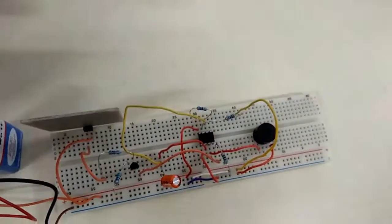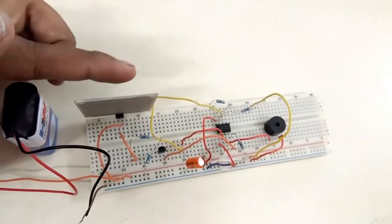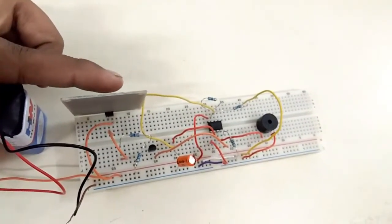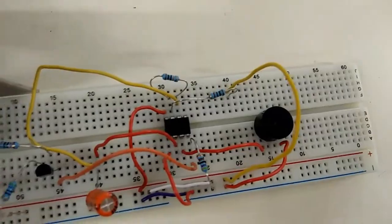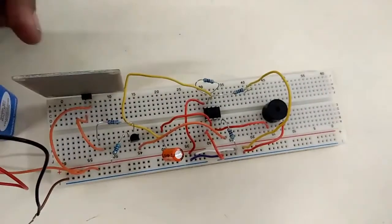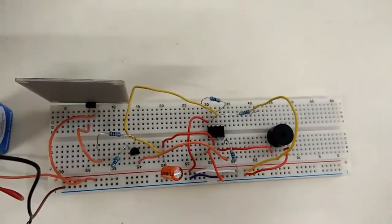Now let's put my finger. You can see it's a very sensitive circuit. As soon as my hand is placed over the rainfall detector circuit, the buzzer has started sounding.